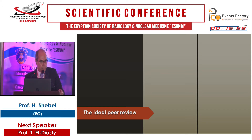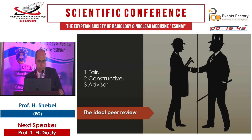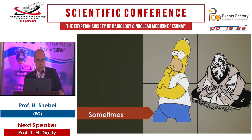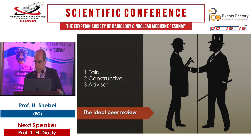Who should be the ideal reviewer? The ideal reviewer is like a mentor — someone who provides you with fair and constructive comments and advice. However, sometimes you may face other types of reviewers who make arguments or have destructive comments, or with whom you cannot communicate. Don't worry about those, because most of the time you will find the ideal gentlemen, especially when you submit to high-ranking journals.